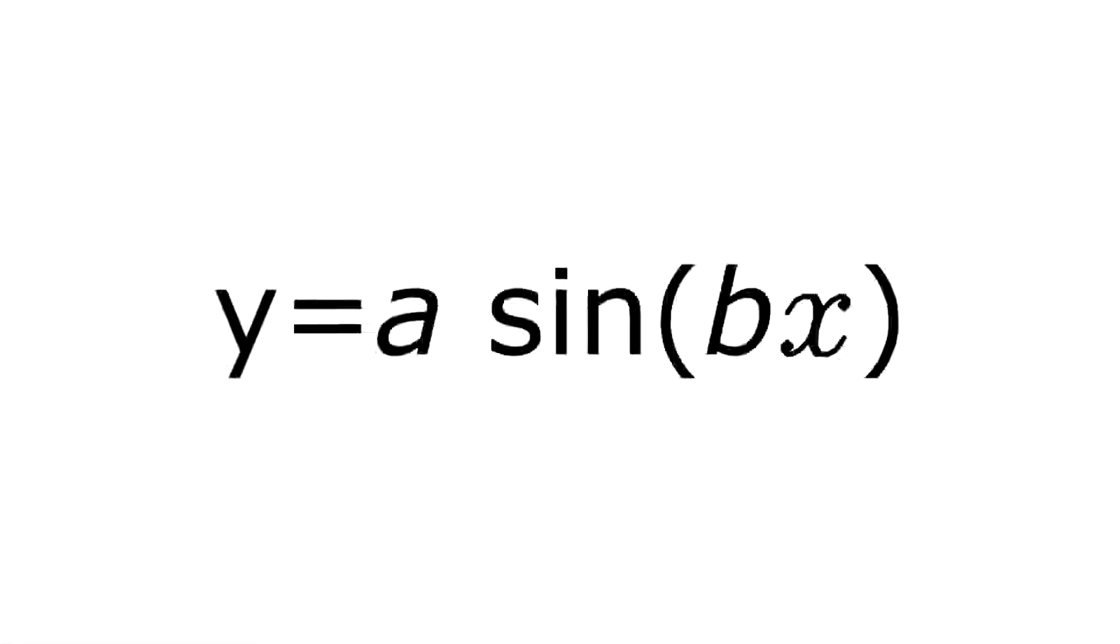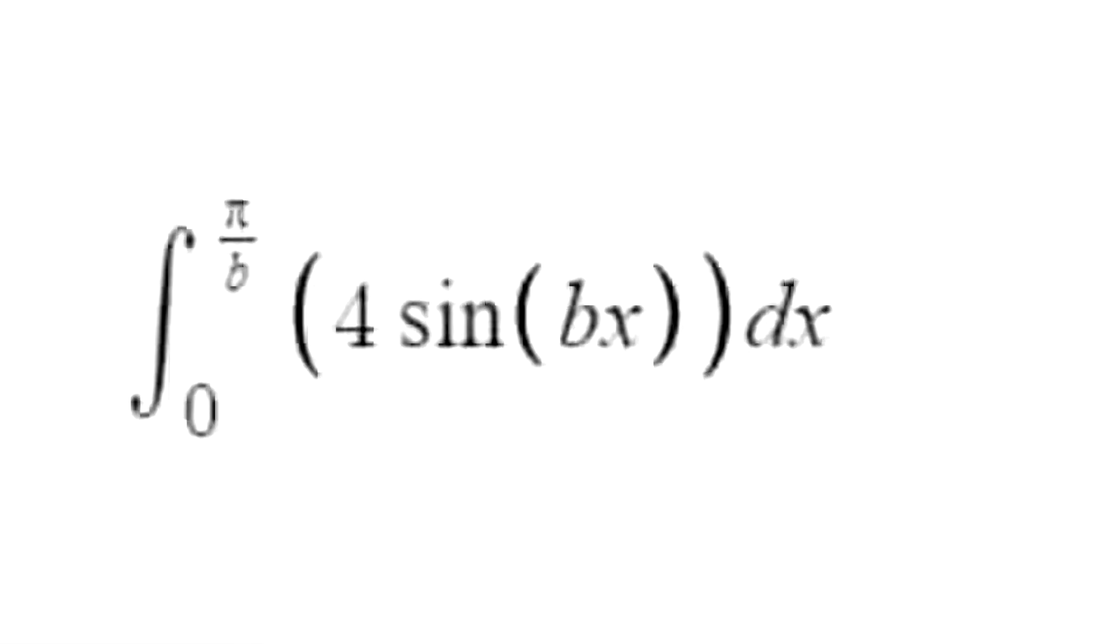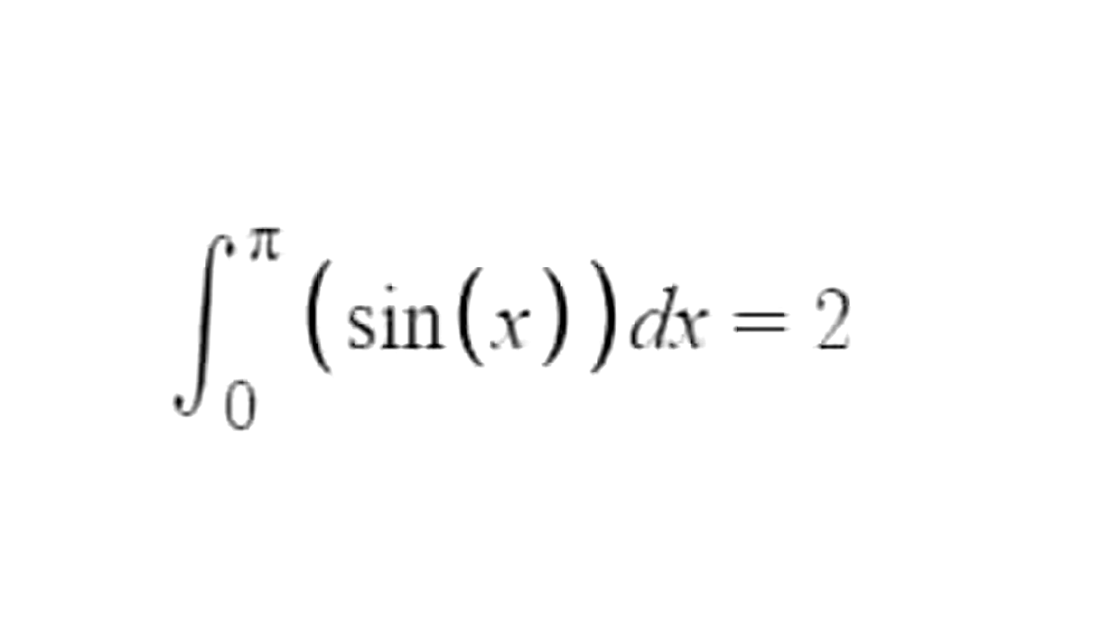In the parent form y equals a sine of bx, the period of the curve is pi over b. Using this, we can set ourselves an equation for what we want to use. This equation is the integral from 0 to pi over b of 4 sin bx dx equals 25.